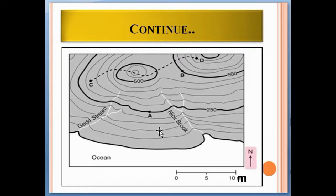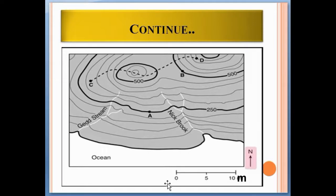A contour lines map also has a compass, as you can see — this compass is denoting the north direction. If north is this side, then east is this side, west is this side, and south is this side. The contour map also has a scale, as you can see here.